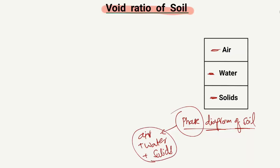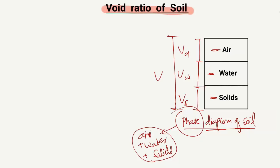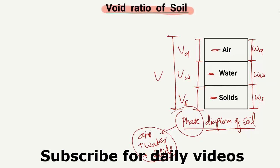The volume of air is usually represented by VA, the volume of water is represented by VW, and the volume of solids is represented by VS. The total volume of the soil sample is represented by V. Similarly, the weight of air is represented by WA, the weight of water is WW, and the weight of solids is WS.